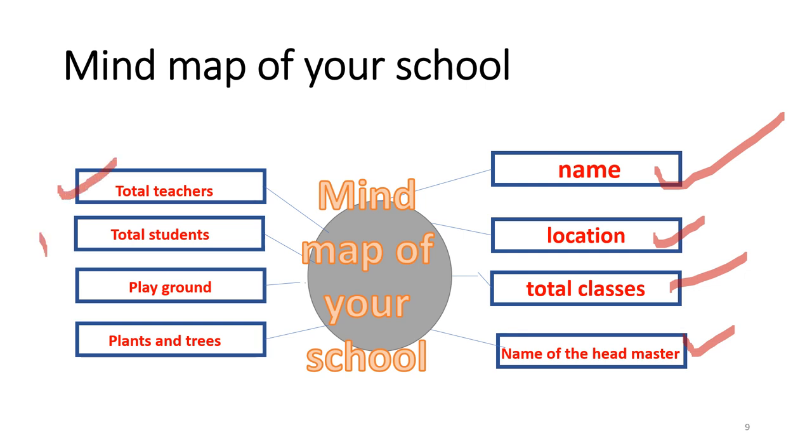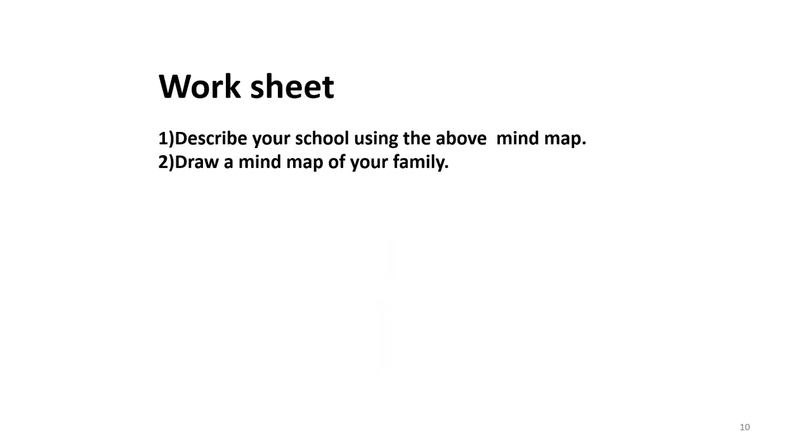How many teachers are working there? How many students are studying there? Is there any playground? If it is so, you write yes and write something about your playground. Are there any plants and trees? If yes, write something about your school trees and plants. This is the data around the theme of your school. Using this data, you write a paragraph about your school.